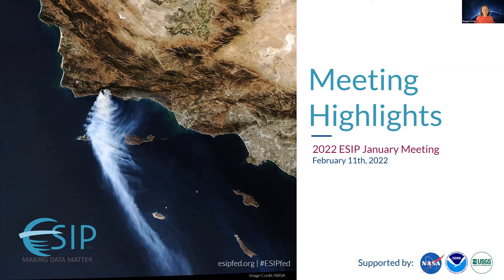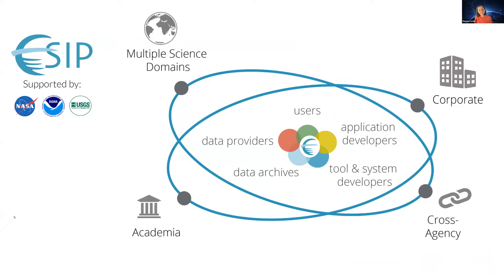ESIP hosts two large conference-style meetings each year, typically in January and July. We do this to connect and create collaborative opportunities for individuals and organizations working across the data lifecycle and across sectors. These meetings help earth science data professionals find each other, work together, and leverage collective expertise to make progress on common data challenges — ultimately making earth science data more discoverable, accessible, and useful to researchers, practitioners, policy makers, and the public.